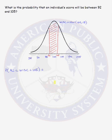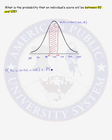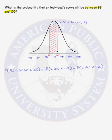The last probability calculation we will do is: what is the probability that an individual's score will be between 92 and 105? That region is already shaded on our normal curve, representing the area under the curve in the shaded region. We want to know the probability that a WISC score is between 92 and 105. One way to do this is to say this equals the probability that the WISC score is less than 105, minus the probability that the WISC score is less than 92. What we are left with will then be the shaded region.